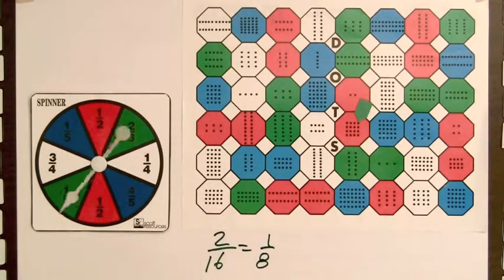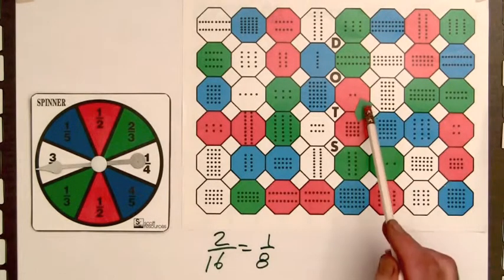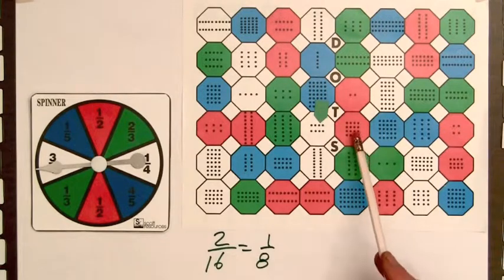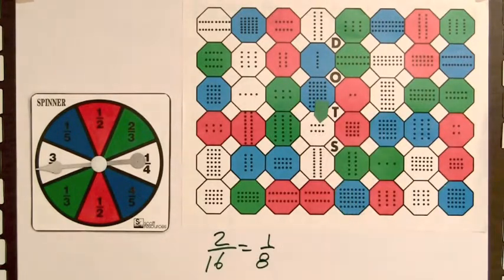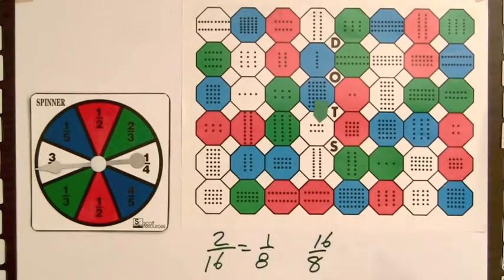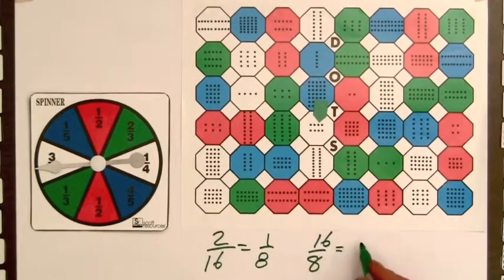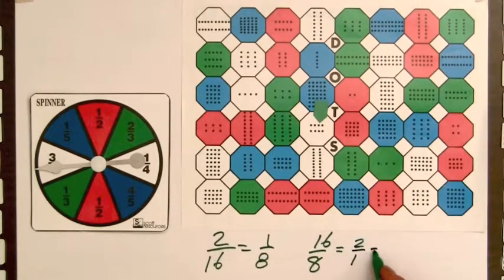Spin the spinner. Okay, we've got white, so we go over here. Now the ratio is 16 to 8. So 16 to 8 is the second ratio, and in lowest terms this is 2 over 1, or 2.